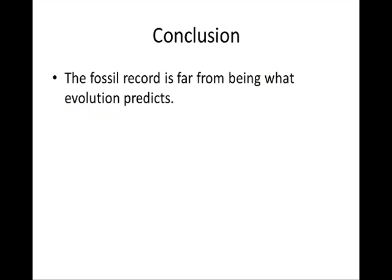The conclusion is very simple: the fossil record is far from being what evolution predicts. When evolution asks how do you explain the fossil record — well, there's nothing to explain, we don't need to explain anything, because the fossil record is not consistent with what evolution claims or predicts.